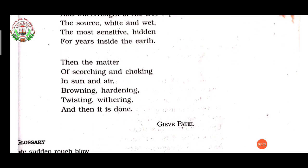Then the matter of scorching and choking in sun and air — browning, hardening, twisting, withering — and then it is done. 'Scorching' means getting scorched in the sunshine. 'Choking' means dying. 'Browning' means getting brown in color. 'Hardening' means getting hard. 'Twisting' means curling. 'Withering' means drying. 'Done' means it is killed.